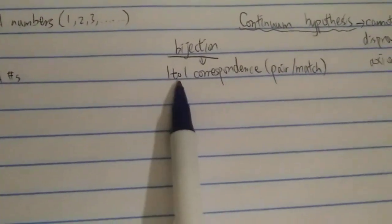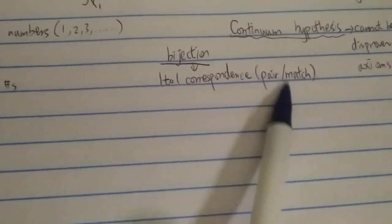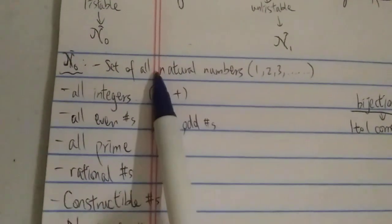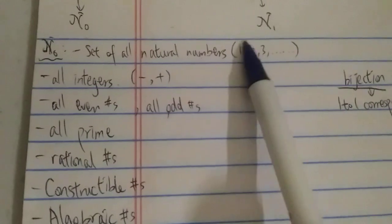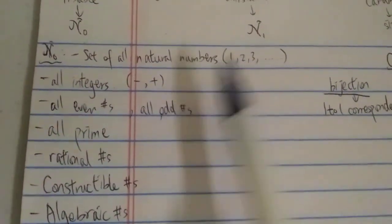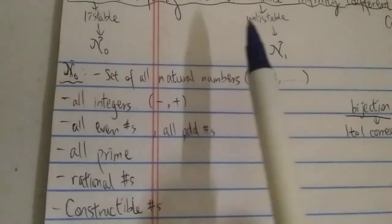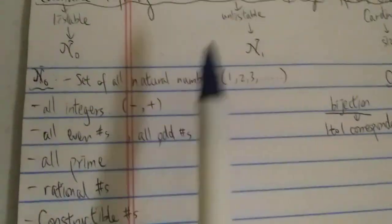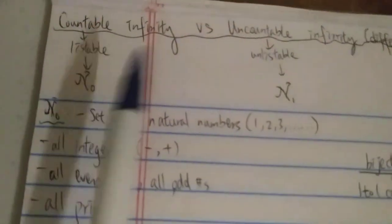The reason is that there's a bijection — a one-to-one correspondence — meaning you can pair each element up one-to-one. For example, all the natural numbers and all the even numbers pair up exactly: one-to-two, two-to-four, three-to-six, four-to-eight, and so on forever. Even though it looks like the natural numbers are twice the size of the even numbers, they are in fact the same size, because you can pair each of them up one-to-one. So they all belong to ℵ₀.